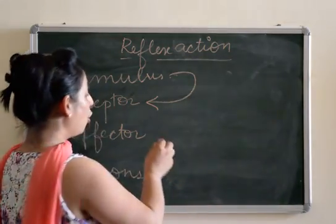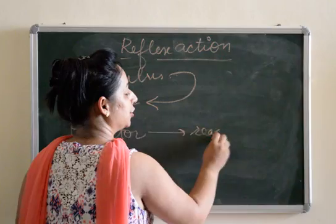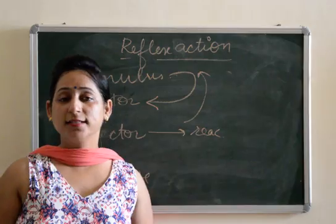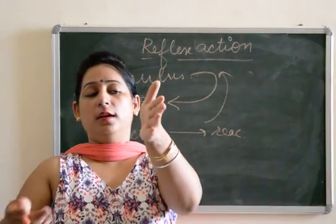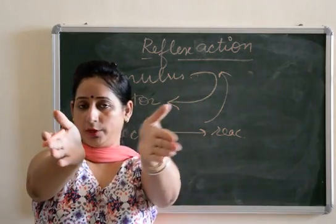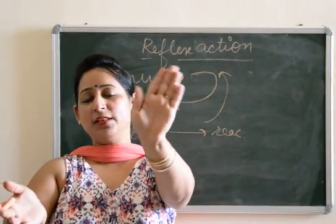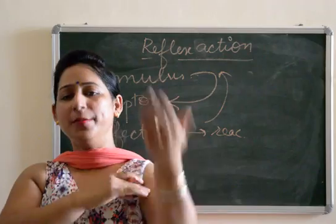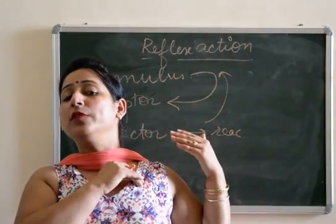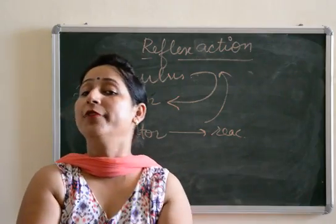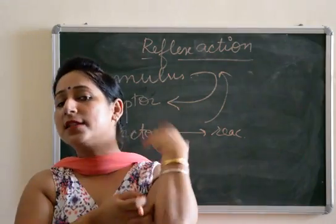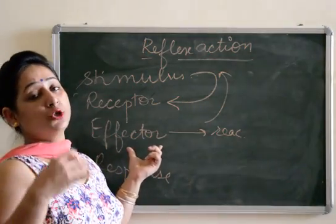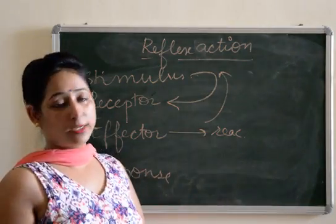There are Effectors. The part of the body which shows the reaction to any Stimulus is known as an Effector. For example, suppose we touch a hot pan — our skin is receiving the Stimulus, so skin is the Receptor. It sends the message to the spinal cord, the message comes back, and we immediately remove our hand. The muscles of the arm are the Effectors because they help us remove our hand.